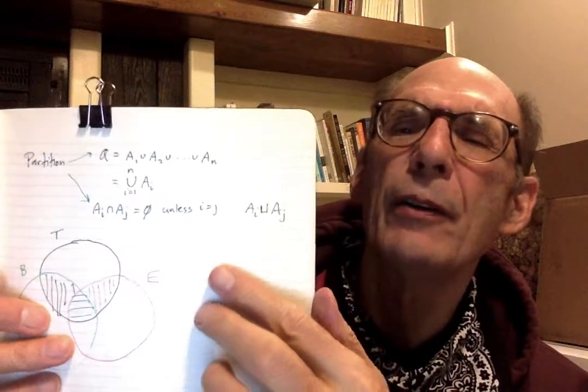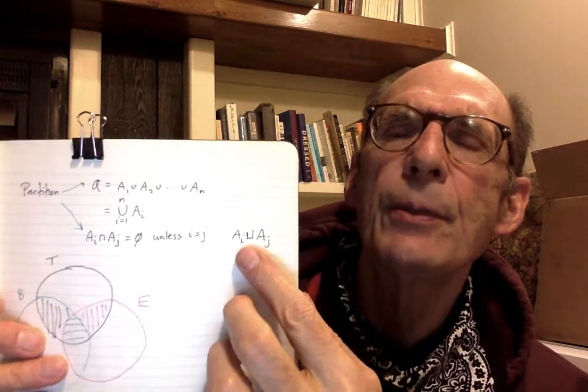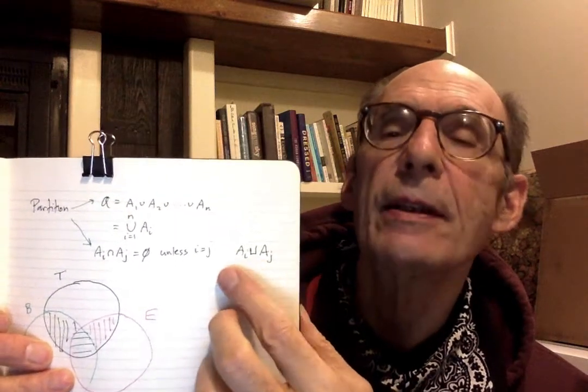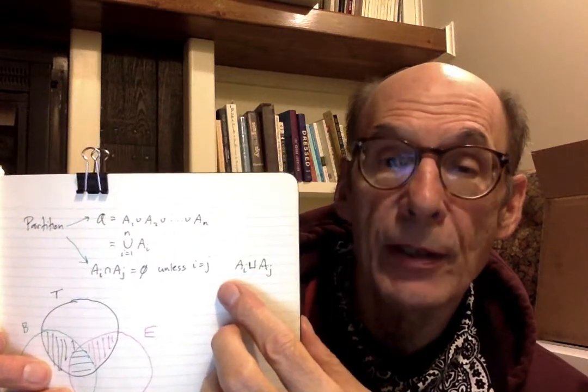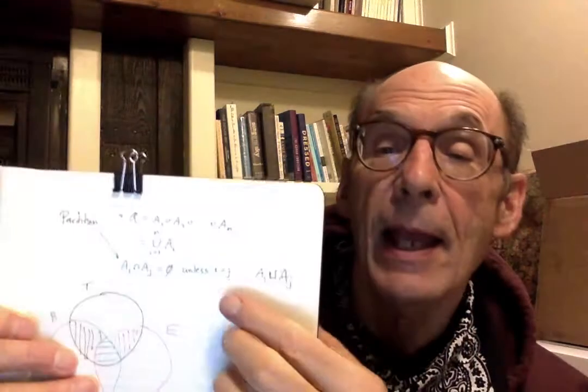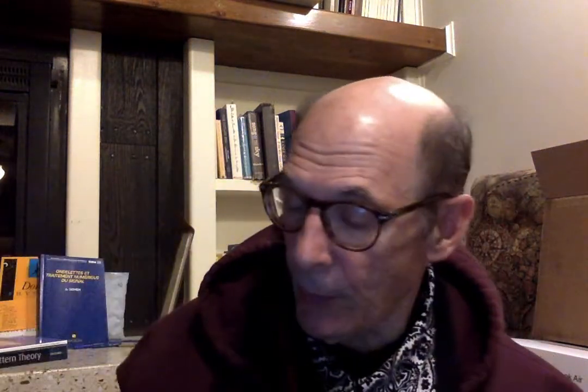There's a symbol that sometimes gets used here. It's a union symbol but it's kind of squared off — this symbol means disjoint union. It means it's the union of A sub i and A sub j and they don't meet; there's nothing in between. That's the disjoint union — a pretty standard notation.